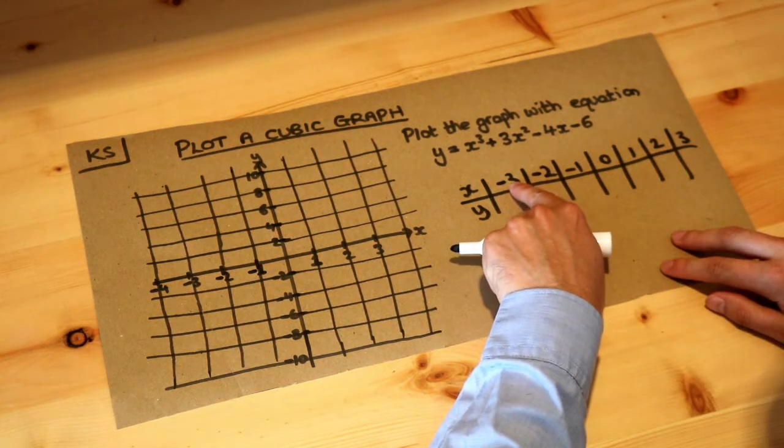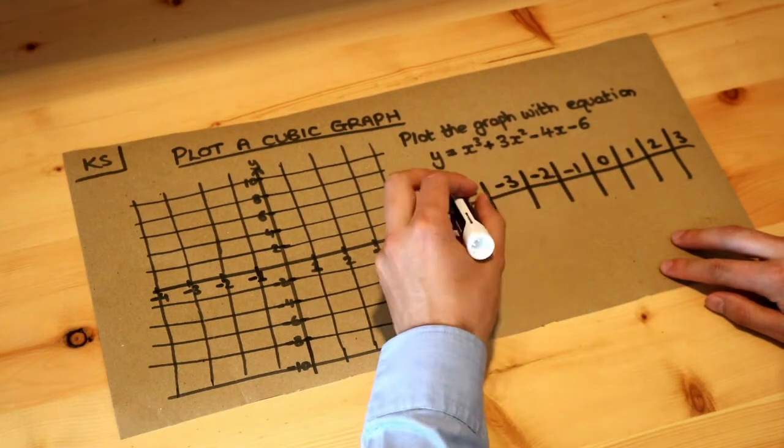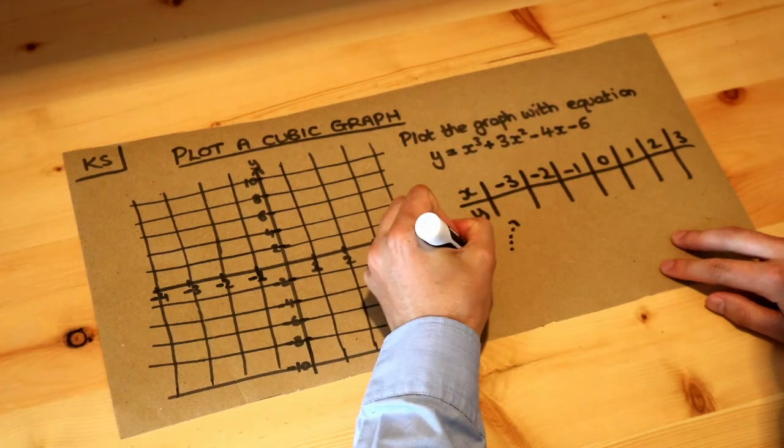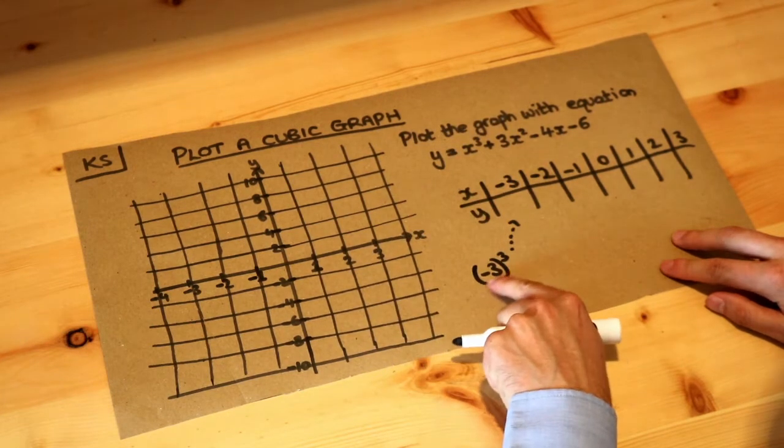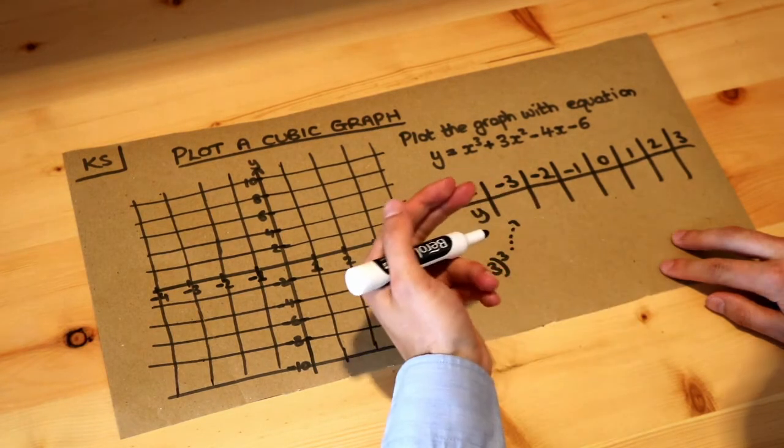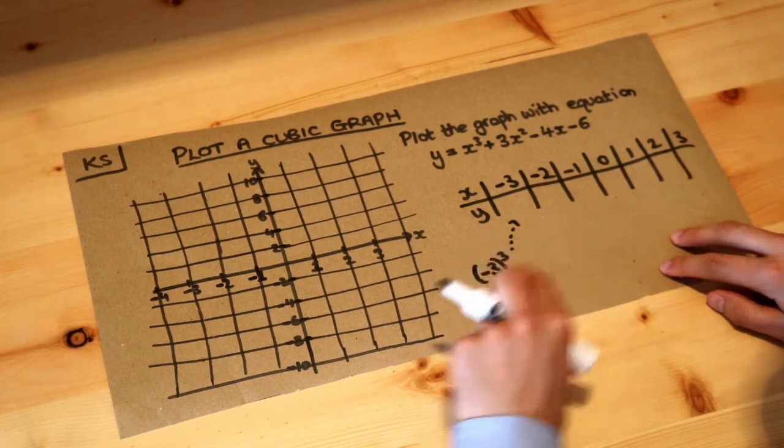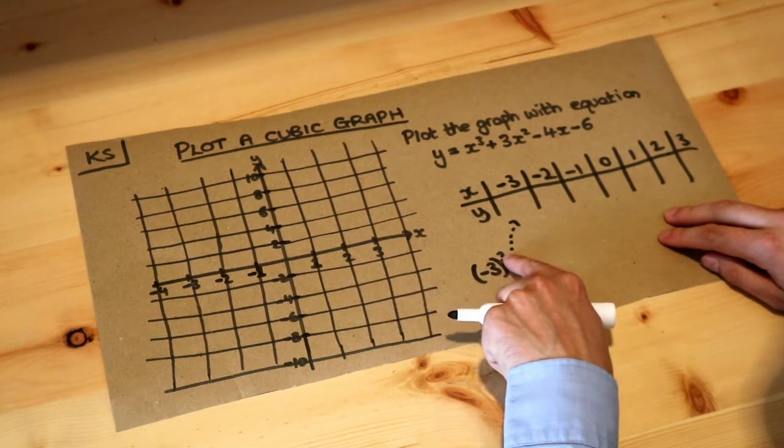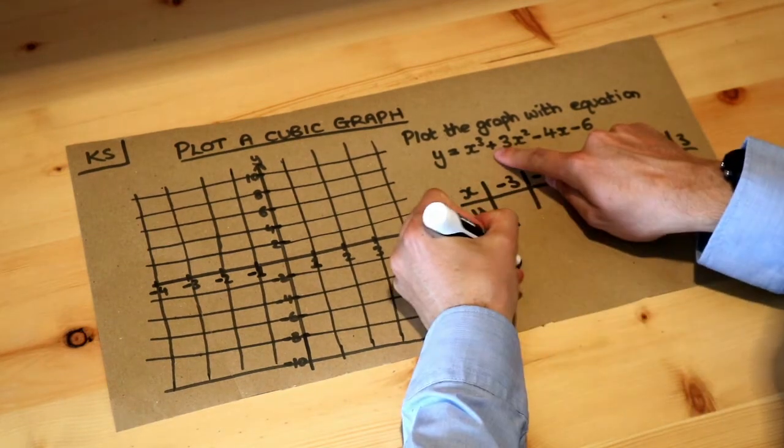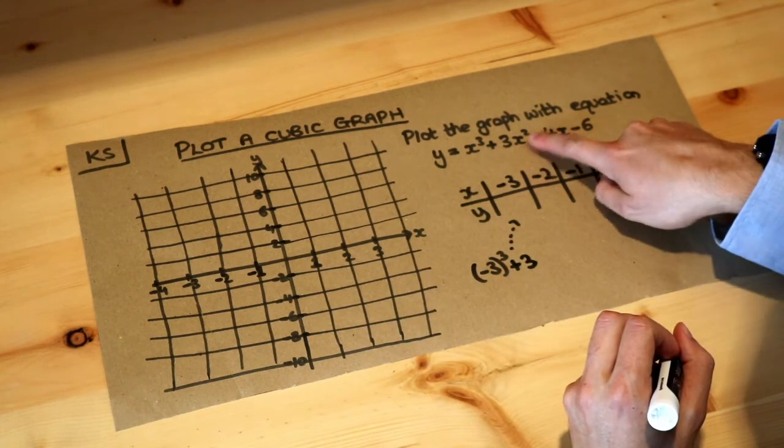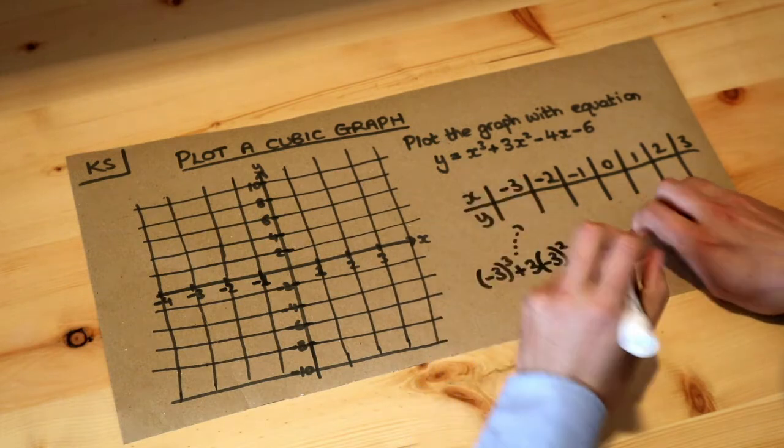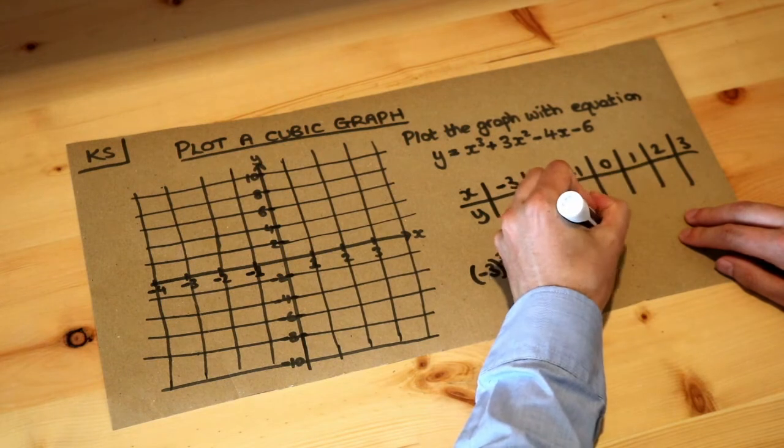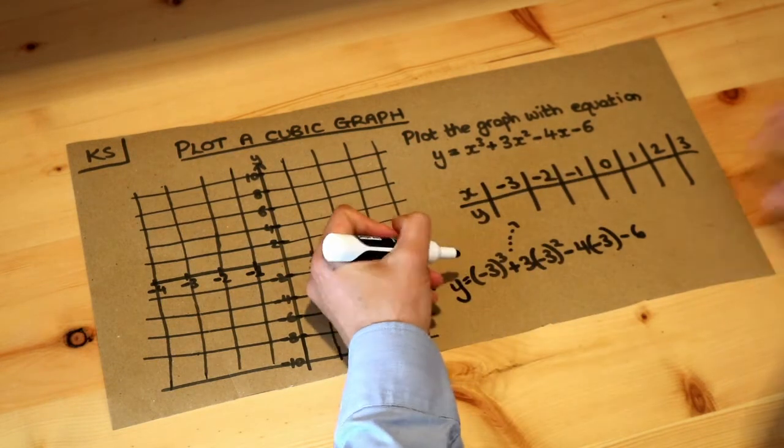Now to work out the y value when x is minus 3, we just need to substitute the minus 3 into this equation. So if I write out the working here, I want to do minus 3 cubed, and notice that I'm putting the value in brackets before I cube it to get around BIDMAS, because I want to do minus 3 cubed, whereas if I don't have the brackets it will be minus 3 cubed. So make sure whenever you have a negative number to a power you always put in brackets. Then we've got plus 3 times minus 3 squared, so minus 3 squared, and we definitely need the brackets here, and then minus 4 times in brackets minus 3, and then minus 6. So what's the y value going to be here?